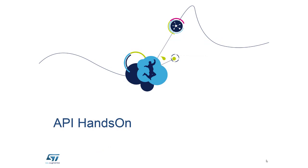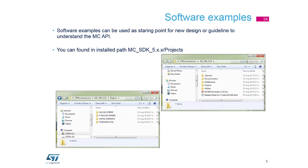We have about two hours left — we usually have lunch at 12 o'clock. We will start with the first part and see how fast we can go through the examples. Just before that, we have some slides about hands-on and example projects. Engineers usually learn from examples and copy-paste, which is a nice way to make your own code. To avoid making mistakes, it's good to have examples — try them, play with them, and modify.